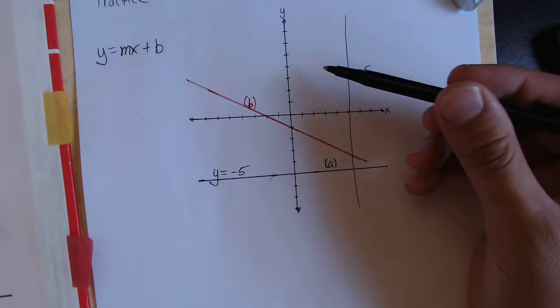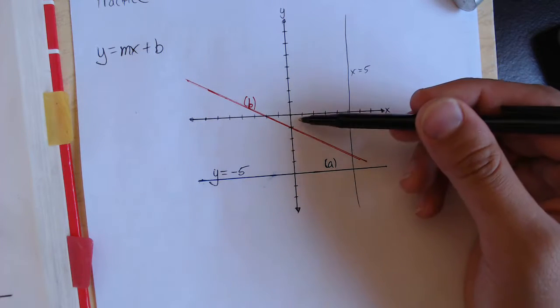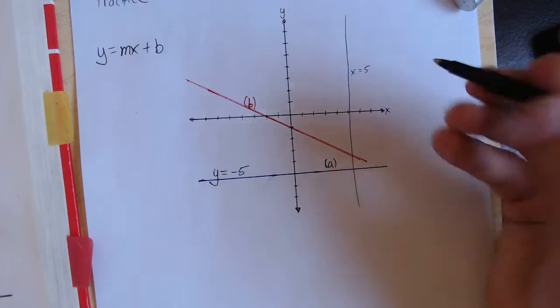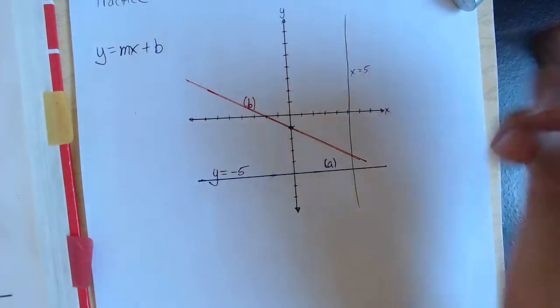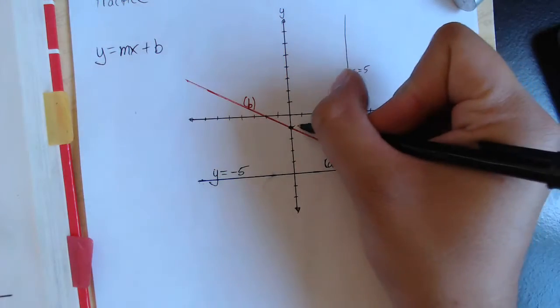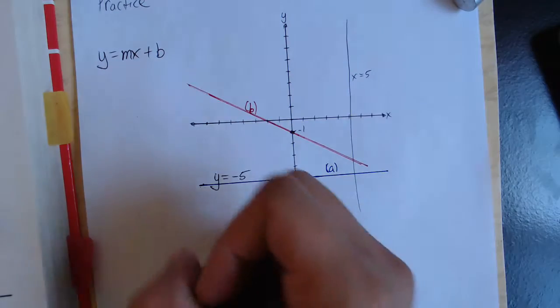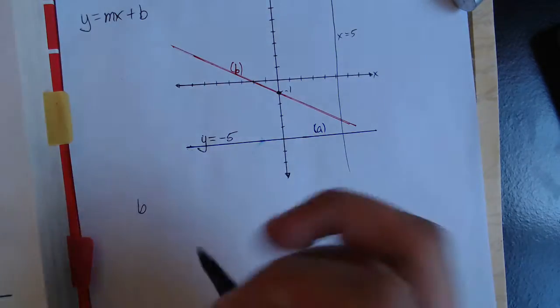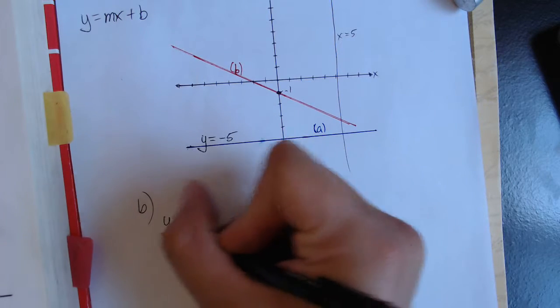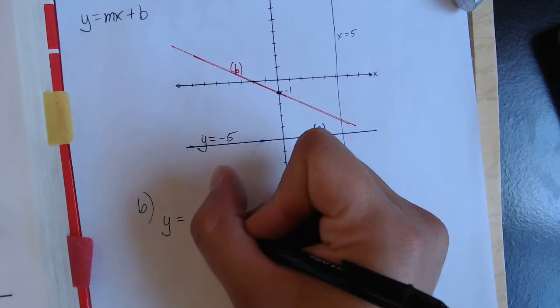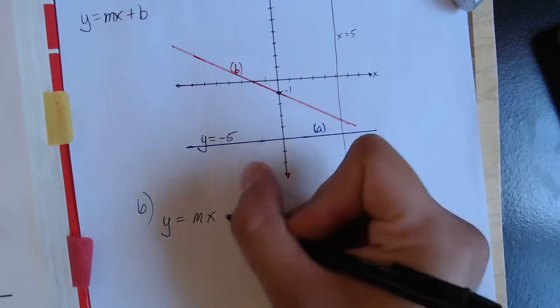So to find our y-intercept, we just go down the y-axis, find where it crosses, and right here it crosses at the point negative one. So our b is going to be negative one. So when it comes to the equation of line B, we already know that y is going to equal m times x minus one.